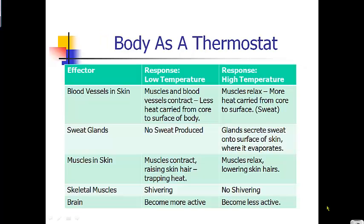There are things your body does involuntarily to help maintain body temperature and keep normal body functions. If you are too cold, your blood vessels and muscles in your skin will contract, carrying less heat away from the core of your body — less heat is carried out to your arms and legs. If you're too hot, your muscles and blood vessels relax, allowing more blood to be carried out to your arms and legs so it can be cooled by your sweat.